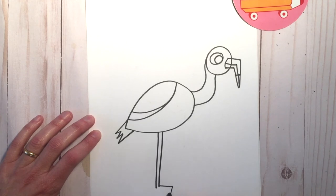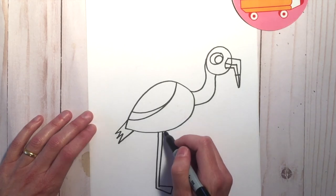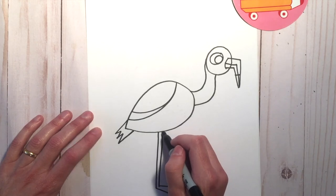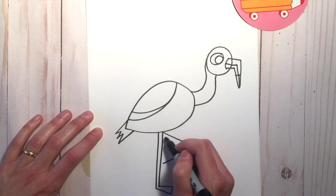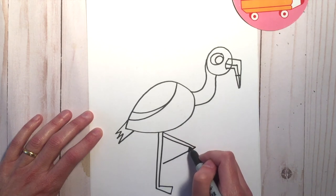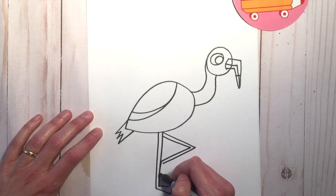And then a flipper foot, then we're going to do another leg that angles outward. At the end, you're going to add a flipper foot.